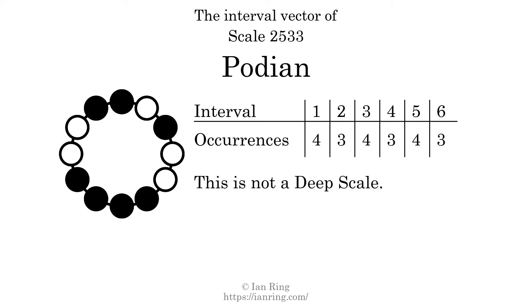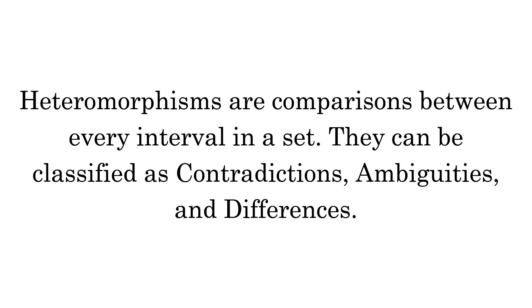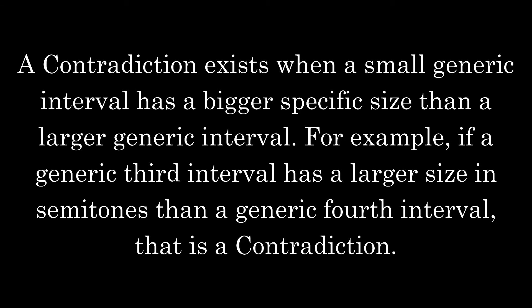Each interval does not appear in this scale a unique number of times, so this is not a deep scale. Heteromorphisms are comparisons between every interval in a set. They can be classified as contradictions, ambiguities, and differences. A contradiction exists when a small generic interval has a bigger specific size than a larger generic interval. For example, if a generic third interval has a larger size in semitones than a generic fourth interval, that is a contradiction.